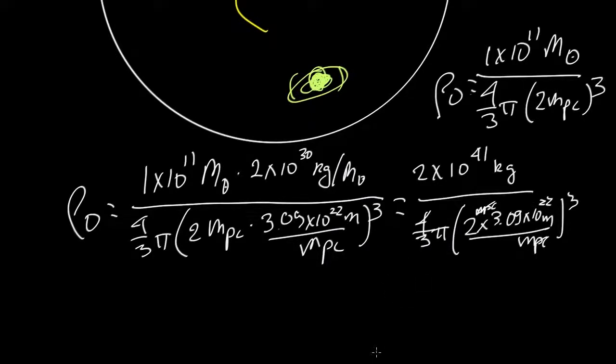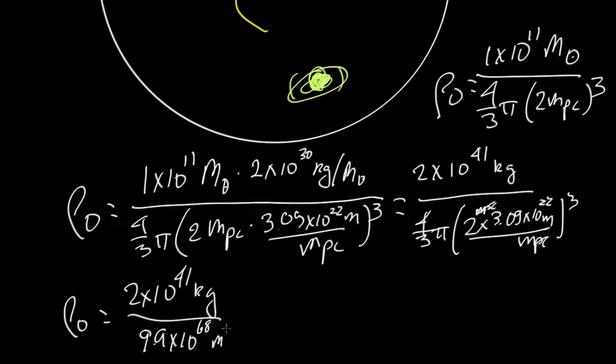So this gives us, for the calculation of the density, 2 times 10 to the 41 kilograms in the top, and a volume of 9.9 times 10 to the 68 meters cubed. And that gives us a total density in our part of the universe of 2 times 10 to the minus 28 kilograms per meter cubed.